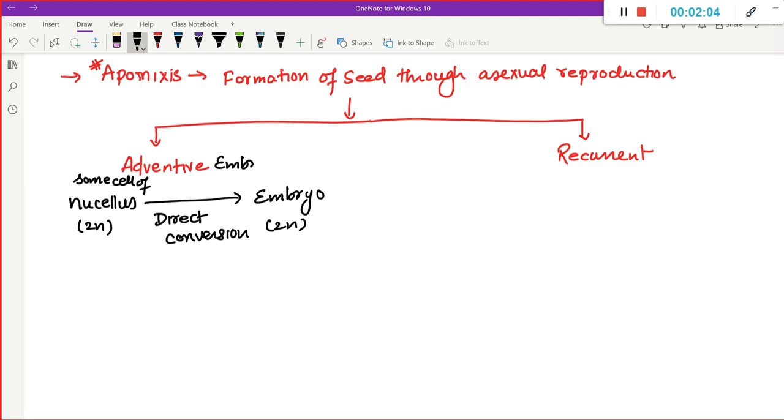which is formed by Apomixis. Now the example of this one is your Citrus. You get examples like Mangifera here, which can be seen.